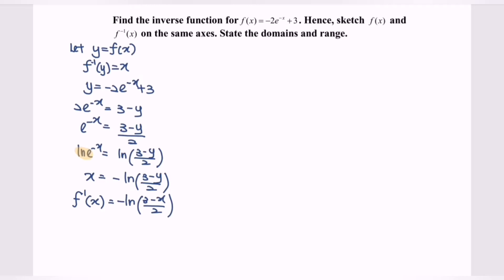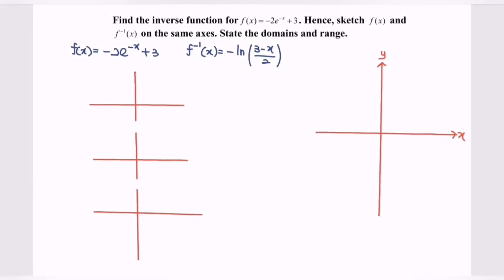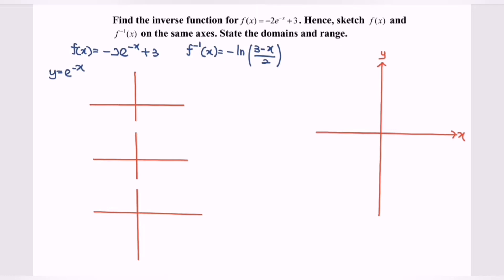Next, what we have to do is sketch the graph. I'm going to focus on the graph for f(x), given the expression negative 2 times e to the negative x plus 3. First, I'll start with the basic graph where y equals e to the power of negative x. As we know, the asymptote for this is y equals 0.